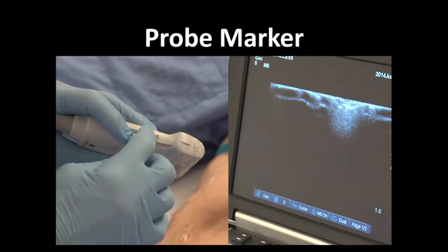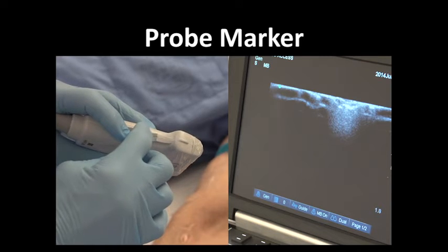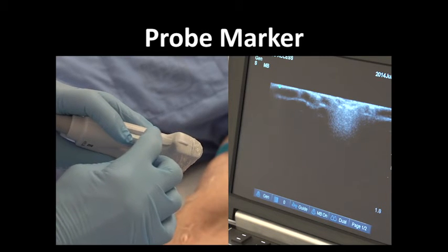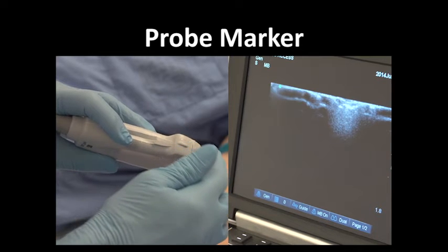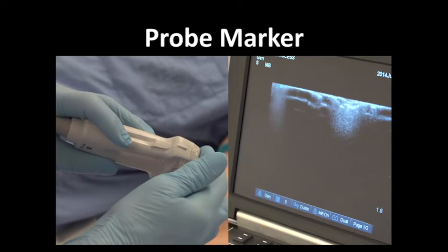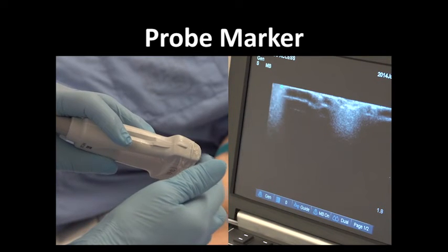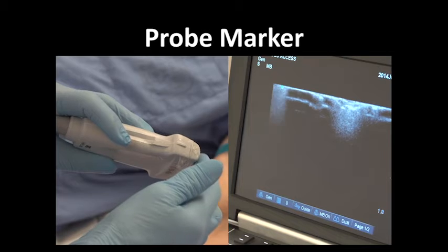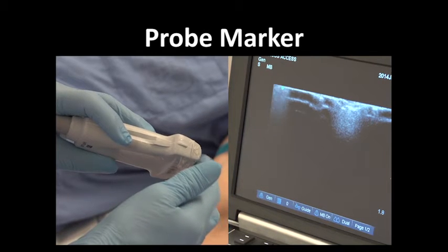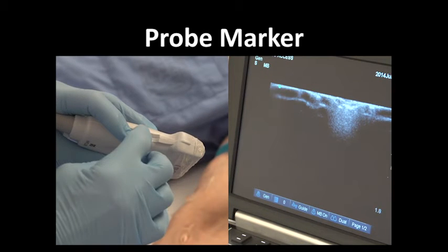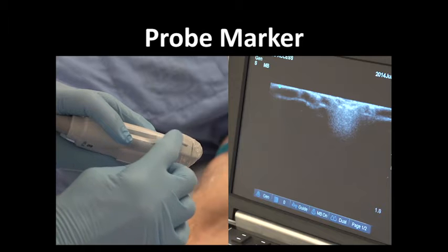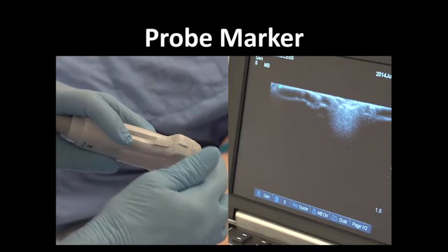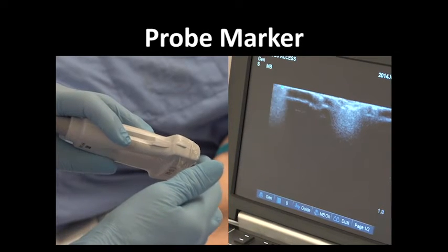Before starting your ultrasound exam, take note of the probe marker and the corresponding dot or screen marker. Tapping on the side of the probe near the marker can help confirm which side the marker is located on. The marker on the probe and the dot on the screen should be kept on the same side of the operator's line of sight at all times.